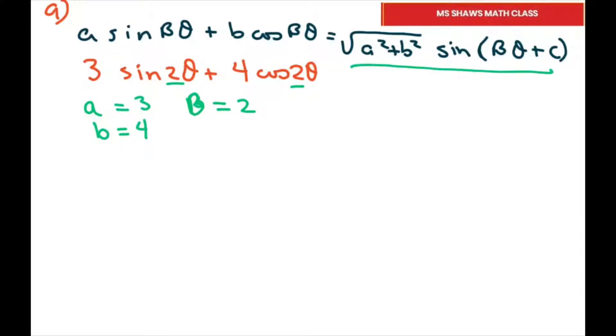All right, so we need to fill this out. The only thing we're missing is the C, and recall that our C equals tan inverse, or inverse tan of b over a, which in our case is inverse tan of 4 thirds. I'll just put that in the calculator. I got approximately 0.9273.